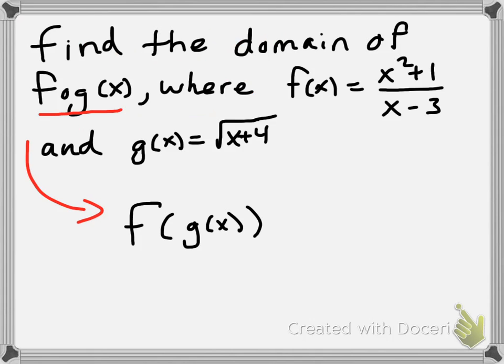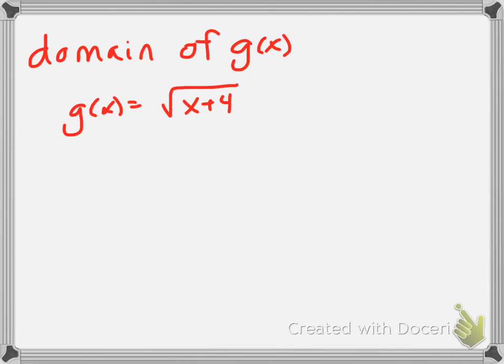So I'll isolate my g(x), which was square root of x plus 4. Now if you recall, in a square root situation, or an even root, we are more concerned with what's inside the radical. And specifically, we want anything that's inside the radical has to be greater than or equal to 0. So I'll set up x plus 4 is greater than or equal to 0, and I'll solve my inequality. In this case, I'll subtract 4.